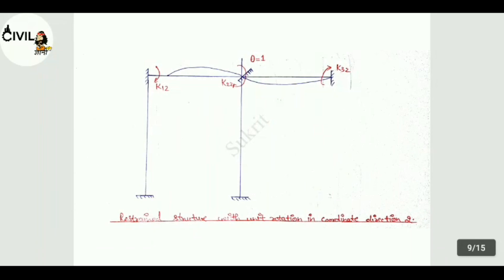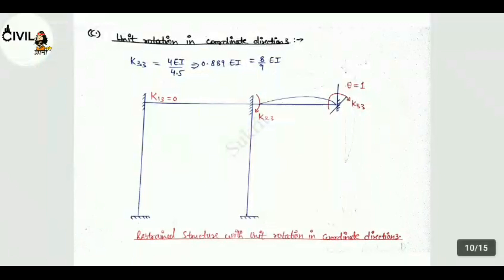See theta equals 1. Now next, unit rotation in coordinate direction 3. K33 will be 4EI/4.5, means 4EI/L, means EC distance. So that equals 8/9 EI. This is your restrained structure with unit rotation in coordinate direction 3. So theta equals 1. This gives value of K33.